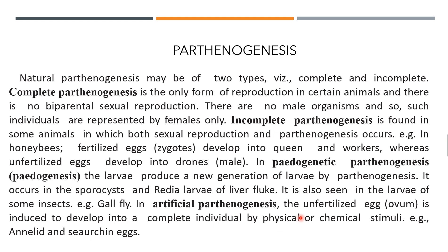For this first lesson, learn all the book back questions. Whatever distinguish, differentiate, and give-reasons questions are in the study material, we will ask all of them. Sexual reproduction is more significant than asexual reproduction because it shows variation, and variation is the raw material for evolution. Revise well and come prepared for your quarterly exam. Thank you.